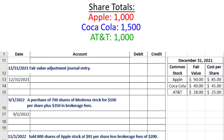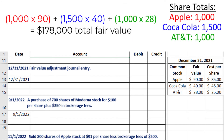Next, we find the total fair value by taking the number of shares we own for each stock and multiplying by the fair value. That's 1,000 times $90 for Apple, plus 1,500 times $40 for Coca-Cola, plus 1,000 times $28 for AT&T, giving us a total fair value of $178,000.